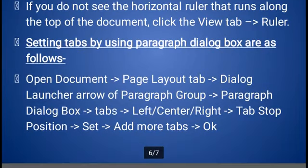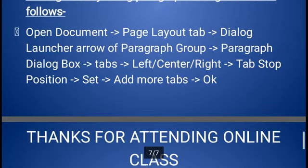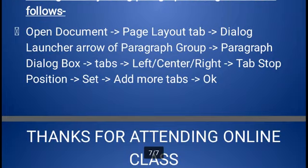If you do not see the horizontal ruler at the top of the document, click the View tab and enable Ruler. To set tabs using the Paragraph dialog box: open your document, go to Page Layout, and click the dialog launcher arrow of the Paragraph group — a small arrow. The Paragraph dialog box opens; then click Tabs. You can select left, center, or right for the tab stop position. Click Set to add more tabs — one by one you can define your tabs — and finally click OK. All tab stop positions will appear on the ruler. Then you can use the Tab key and start typing your data in a tabular style format, line by line.